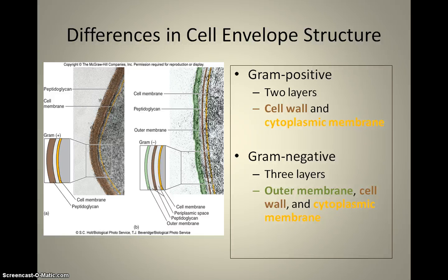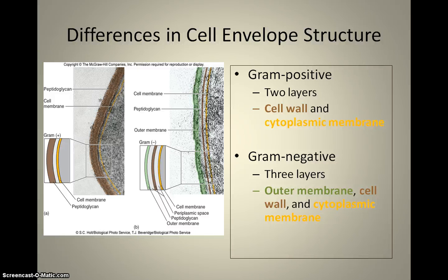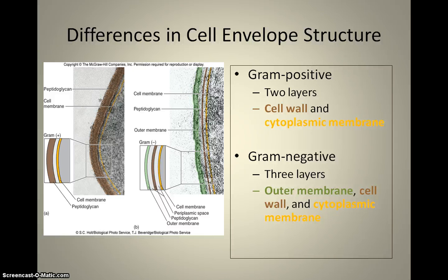If you're a gram-positive bacteria, you have two layers: a cell wall and a cell membrane. The cell wall is a layer of peptidoglycan, which is a polysaccharide that makes up the cell wall. For gram-positive bacteria, it's a very thick cell wall. Then there's a little periplasmic space, and then there's an inner cytoplasmic membrane, which is similar to the phospholipid bilayer of cell structure you learned about in any general biology class.